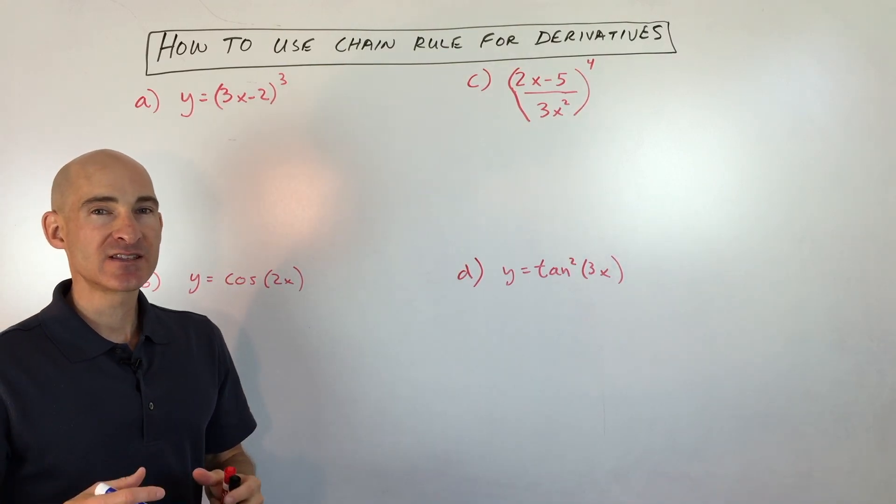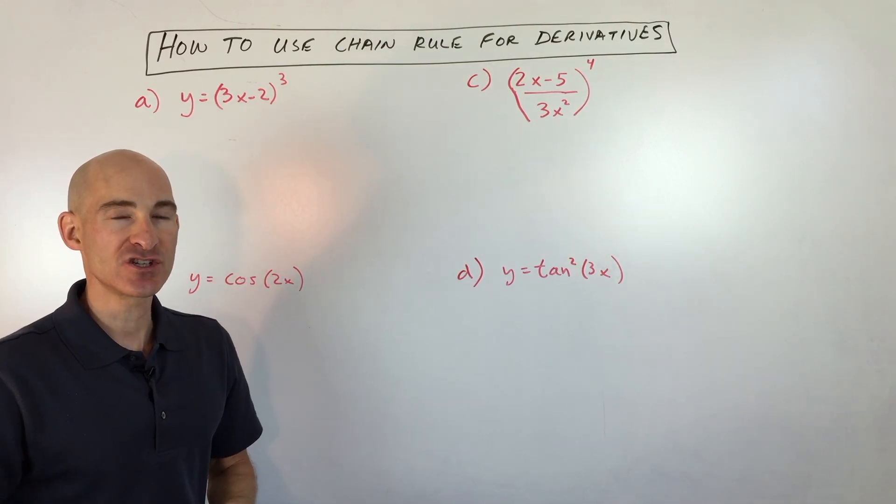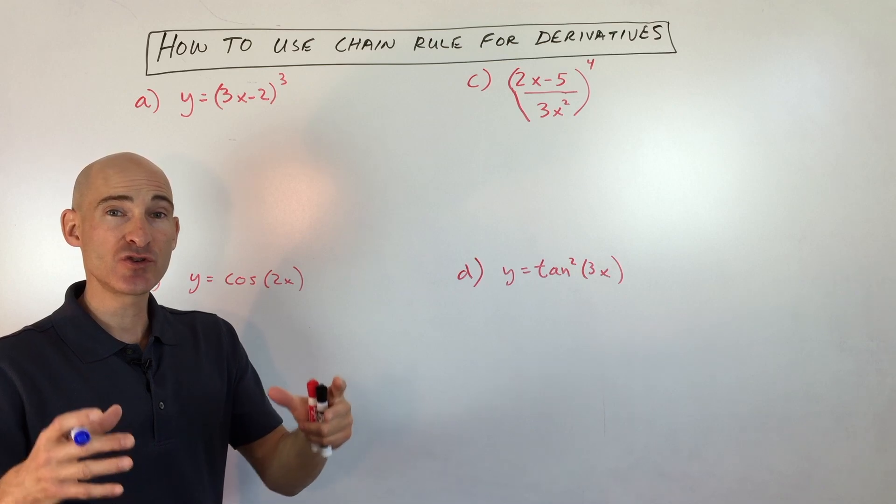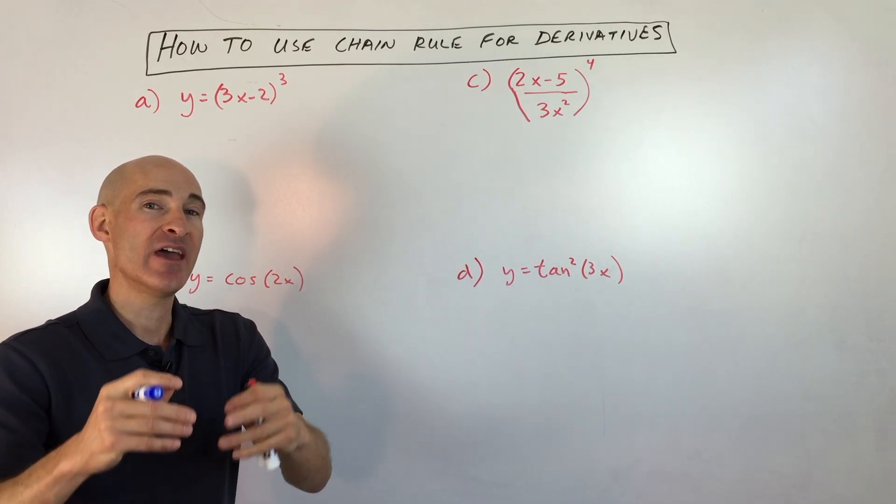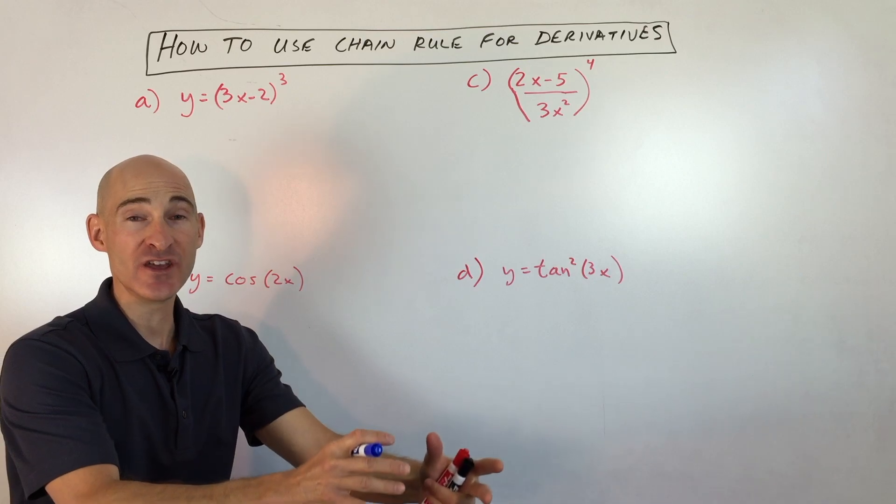So what the chain rule is, it's like a composition of functions. What you're doing is essentially taking the derivative of the outer function and then multiplying it by the derivative of the inner function.